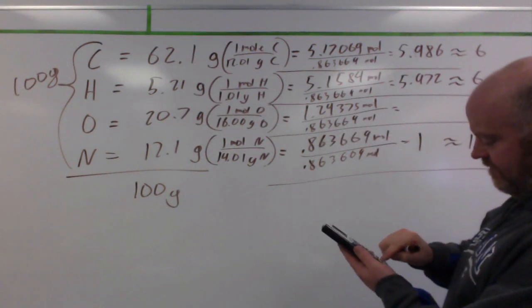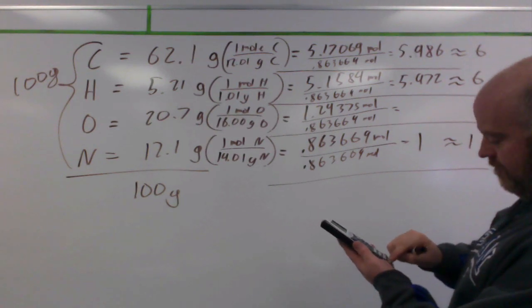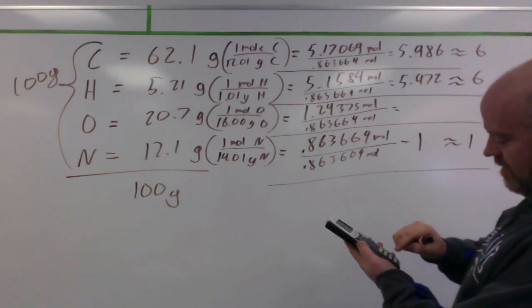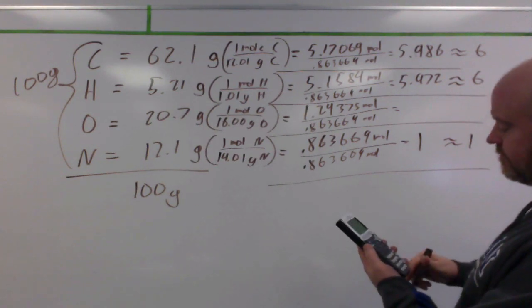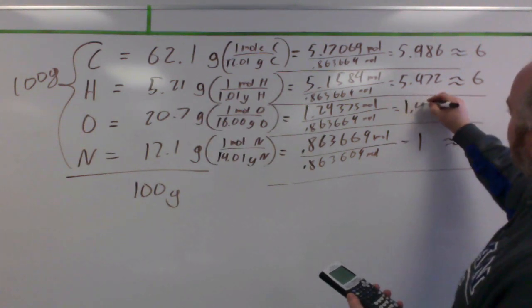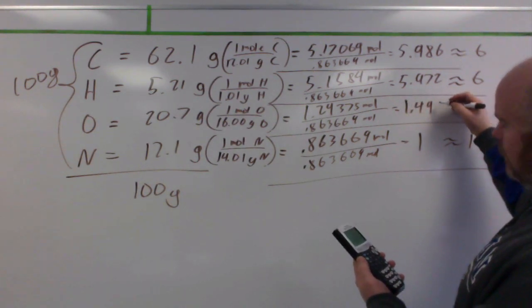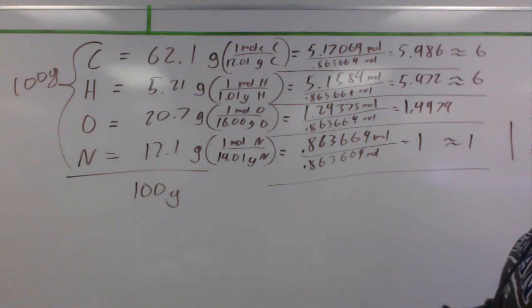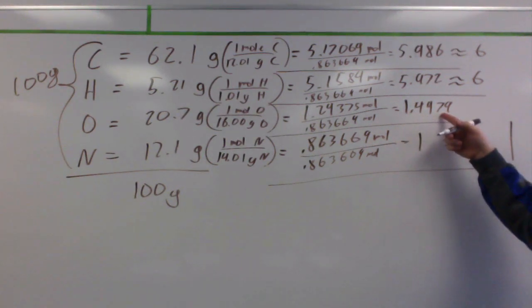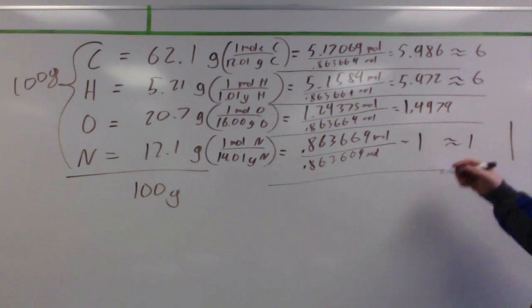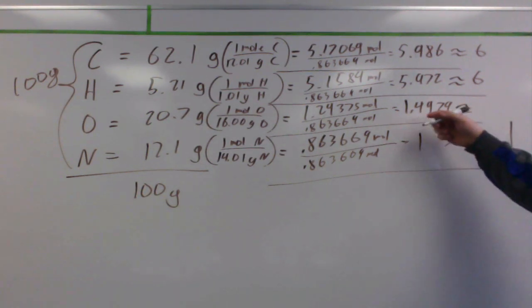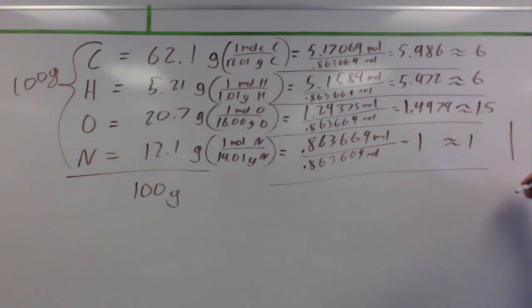1.29375 divided by 0.863669, and now I get a 1.4979. This number is not close to 1, it's not close to 2, it's dead center between those. So, I have basically about a 1.5 compared to everything else.